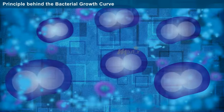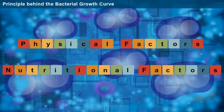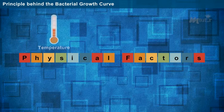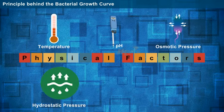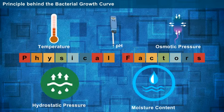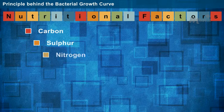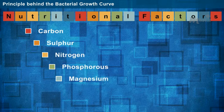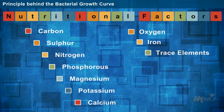The growth of bacteria depends on the physical and nutritional factors. The physical factors include temperature, pH, osmotic pressure, hydrostatic pressure and moisture content of the surrounding environment. The nutritional factors include carbon, sulphur, nitrogen, phosphorus, magnesium, potassium, calcium, oxygen, iron and other trace elements.